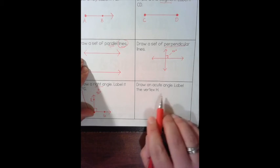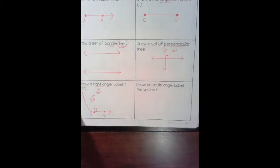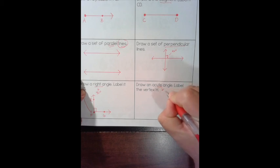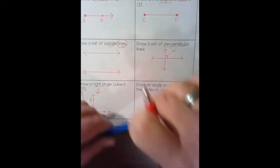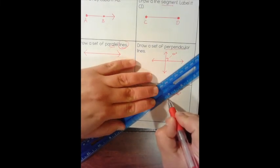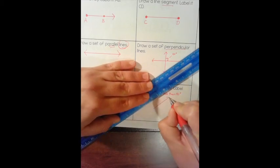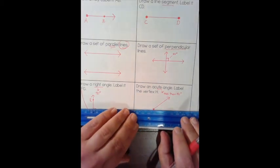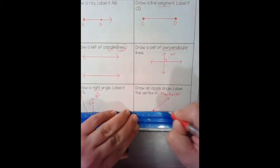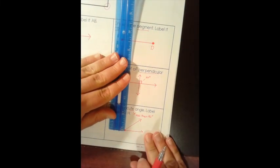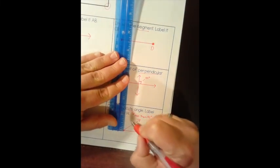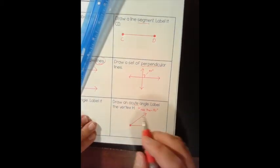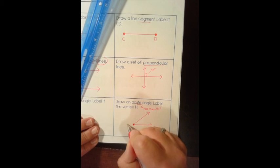Draw an acute angle and label the vertex X. An acute angle is less than 90 degrees. I draw one ray, put my vertex, and draw another ray that forms an angle less than 90 degrees. Using my ruler to show 90 degrees — that's the perfect corner — and the acute angle is less than that. The vertex is labeled H at that center point.